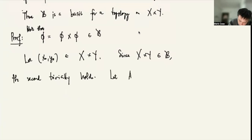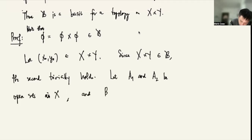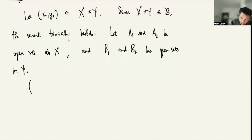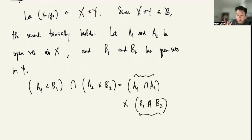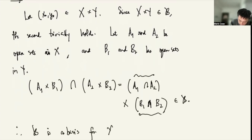Let A₁ and A₂ be open sets in X, and let B₁ and B₂ be open sets in Y. Then (A₁×B₁) ∩ (A₂×B₂) is the same as (A₁ ∩ A₂)×(B₁ ∩ B₂). Since A₁ ∩ A₂ is open in X and B₁ ∩ B₂ is open in Y, this is an element of script B. Therefore script B is a basis for X×Y.